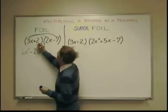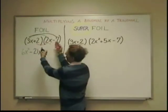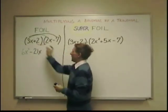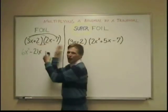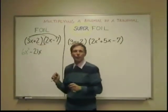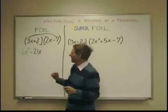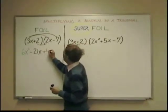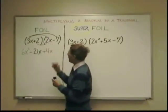Then, I have, next step, inner. The inner two of each parenthesis. It's the inner ones when you have the two binomials next to each other in parenthesis. And that's 2 times 2 is 4, and I have an x here.